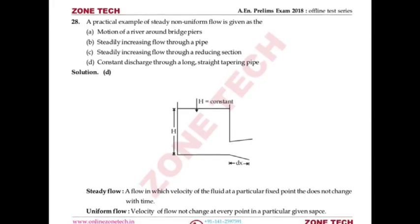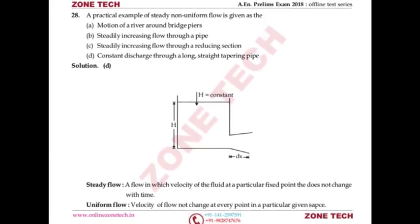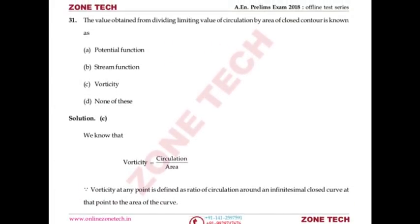Question number 28: Practical example of steady non-uniform flow. Steady flow means velocity doesn't change with time at a fixed point. Uniform flow means velocity doesn't change in a given space. For steady non-uniform flow, velocity doesn't change with time but changes at different points in space. Practical example: flow through a tapering pipe with constant discharge — head is constant (steady), but cross-section area changes so velocity changes (non-uniform). Answer is B.